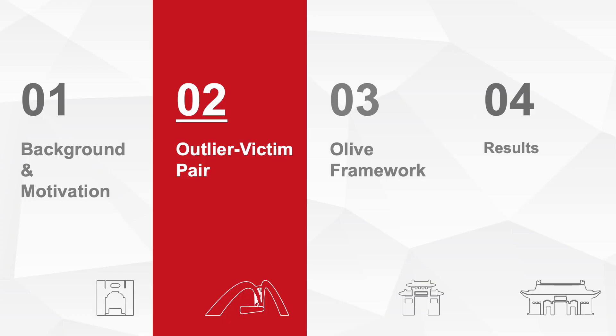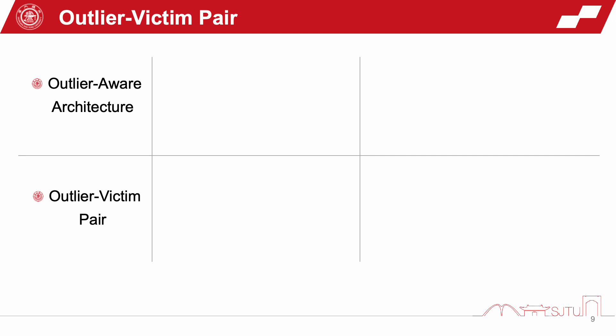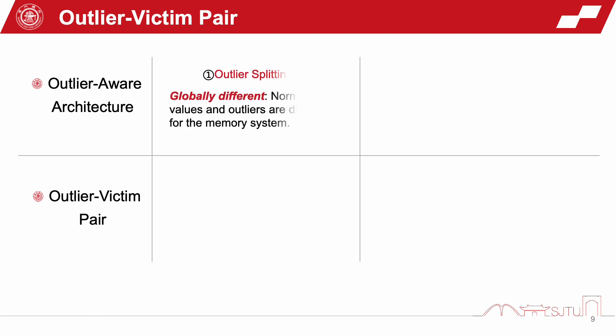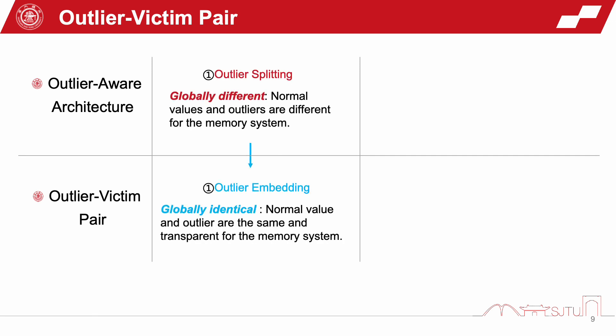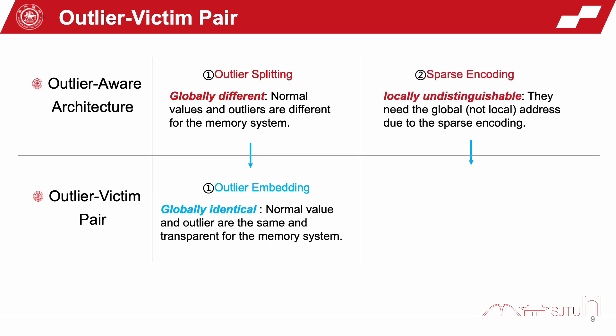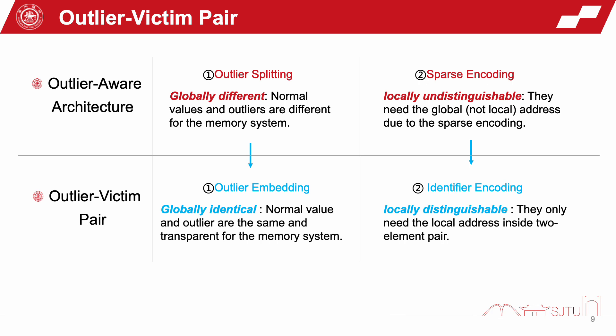Therefore, we propose the Outlier Victim Pair (OVP) to deal with it. Compared to previous outlier-aware architectures, we first convert the outlier split into outlier embedding, which is globally identical, because normal values and outliers are the same and transparent to the memory system. We also change the sparse encoding to identifier encoding, which is locally distinguishable.